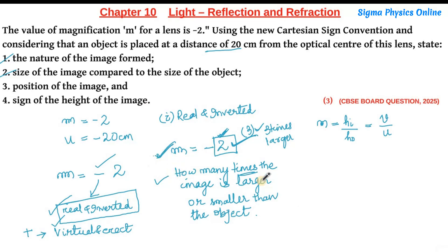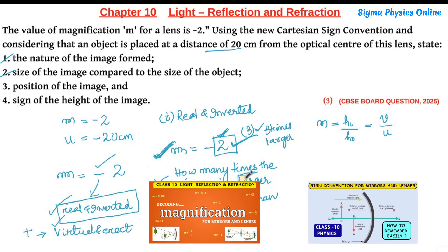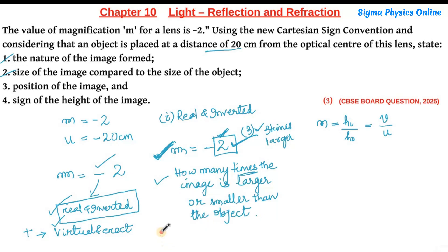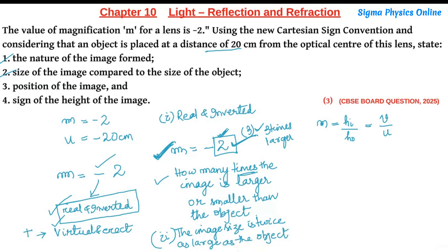I have made two detailed videos on magnification explaining them in detail; the links are in the description box. So the answer to the second part is: the image size is twice as large as the object size.